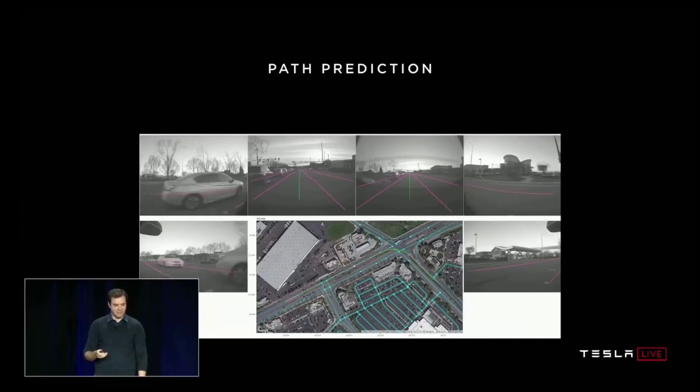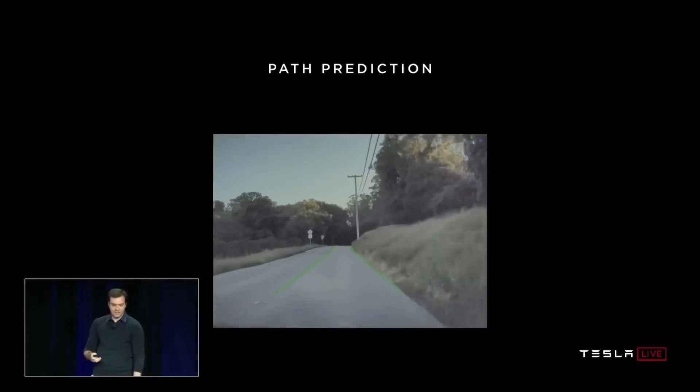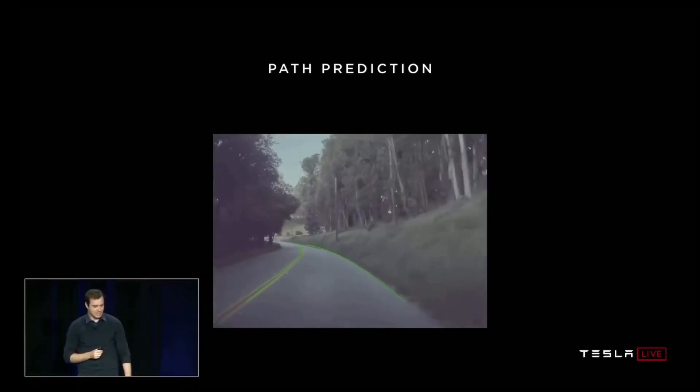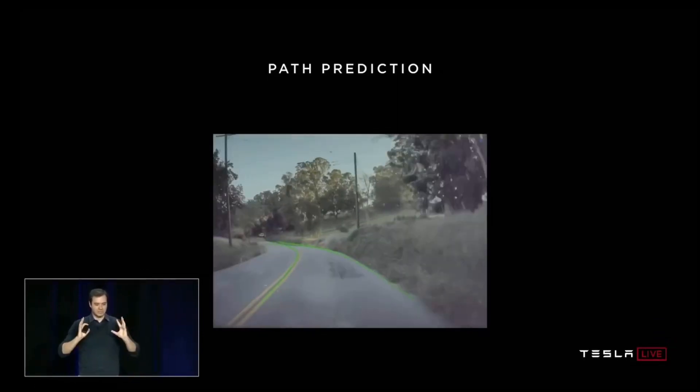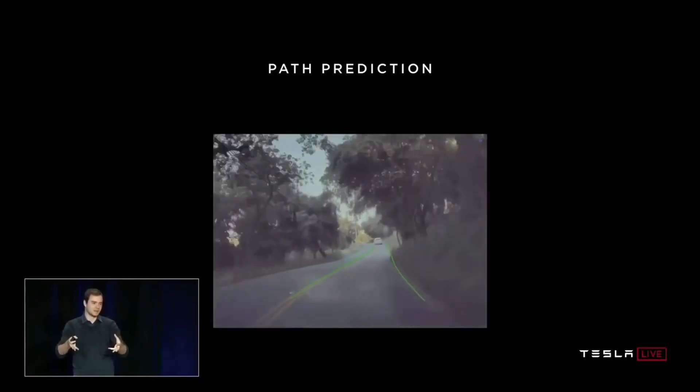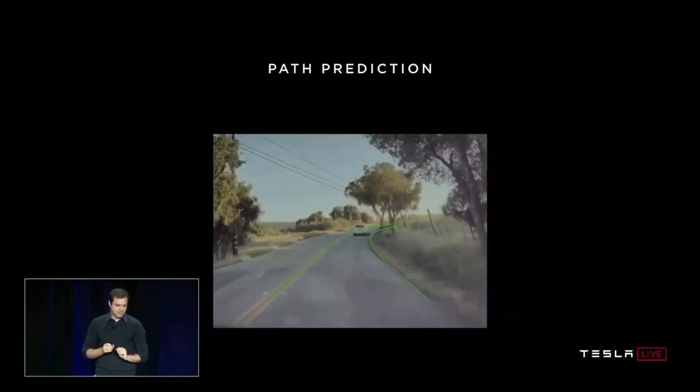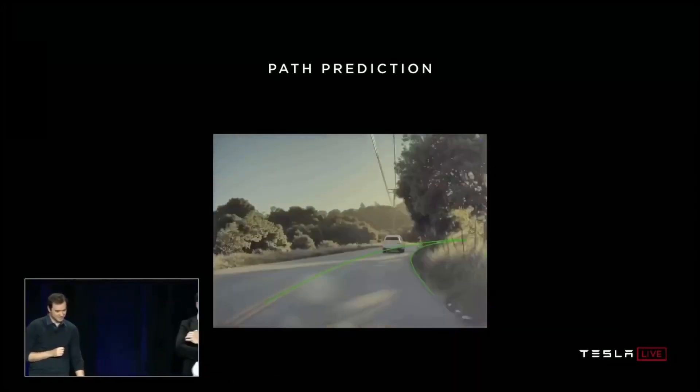Here's an example of path prediction going through a complicated environment. What you're seeing here is a video and we're overlaying the predictions of the network — the path that the network would follow, shown in green. The crazy thing is the network is predicting paths it can't even see with incredibly high accuracy. It can't see around the corner, but it's saying the probability of that curve is extremely high. And it nails it.